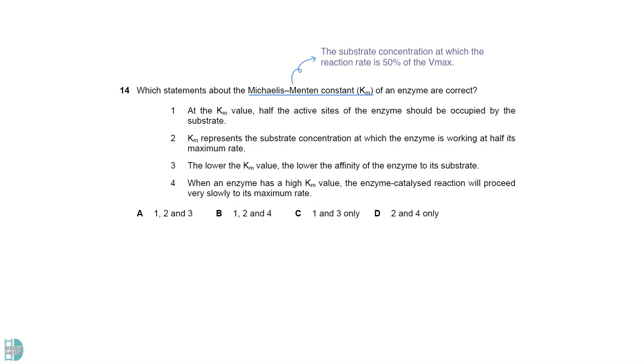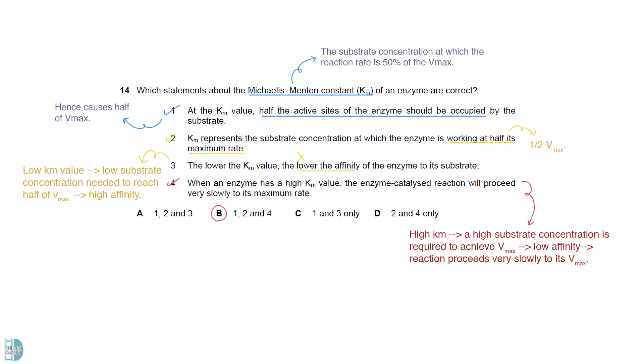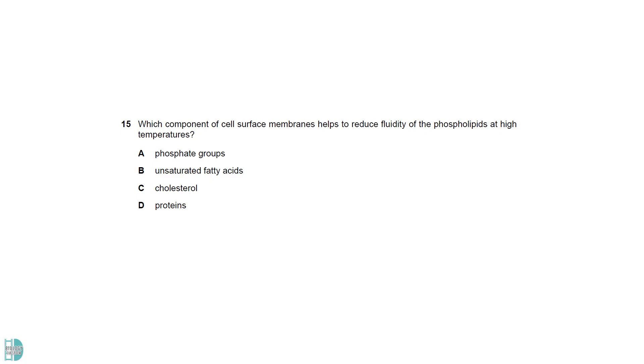Km is the substrate concentration at which the reaction rate is 50% of the Vmax. Since it causes half of Vmax, it is the point where half the active sites of the enzymes are occupied by the substrate. 2 is also correct according to the definition. 3 is wrong. A low Km value indicates a low substrate concentration is needed to reach half of Vmax. This means the enzyme can bind well with a substrate, as it has a higher affinity. A high Km value means that a high substrate concentration is required to reach the Vmax. This shows a low affinity. So it is true that the reaction will proceed very slowly to its maximum rate.